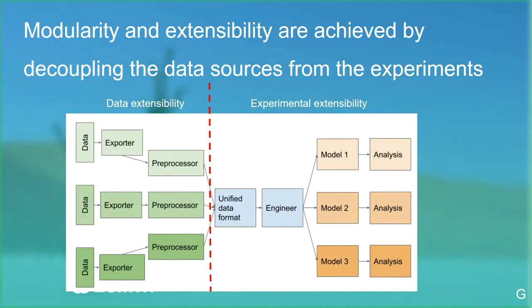Our pipeline consists of five steps. First, exporters that are data-source specific and interact with different data stores to download data to a local location. Then pre-processors, because all data sources have their own quirks — different spatial and time grids — so these massage everything into a unified data format. Thanks to that unified format, the engineer step turns everything into matrices for machine learning models without needing to know where the data came from. Then it's easy to write different models and run experiments.